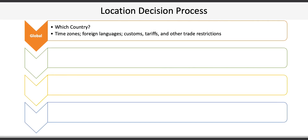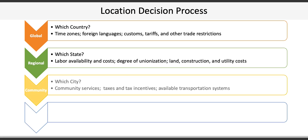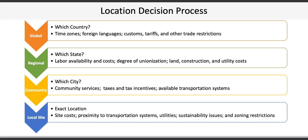After deciding on a country, the regional decision is next — for example, if the US is selected, which state? Considerations include labour availability and costs, degree of unionization, and land, construction, and utility costs. Once the region is known, we move to the community level — if Alabama was selected, then which city in Alabama? Considerations include community services, taxes and tax incentives, and available transportation systems. Finally, we drill down to the exact site location, considering site costs, proximity to transportation systems, utilities, sustainability issues, and zoning restrictions.